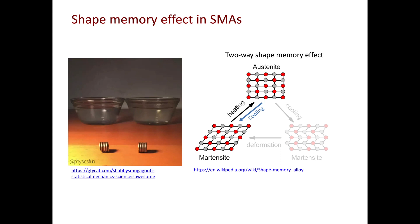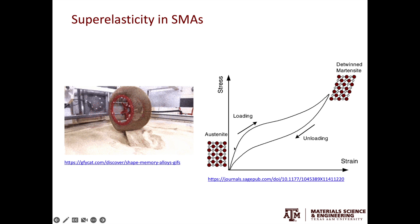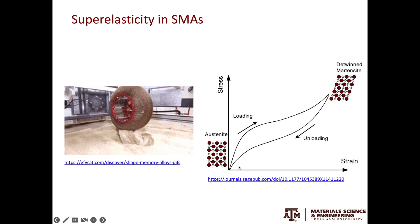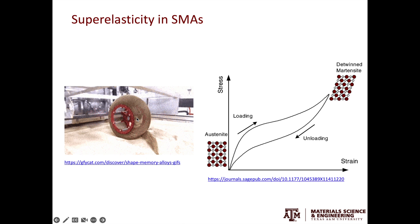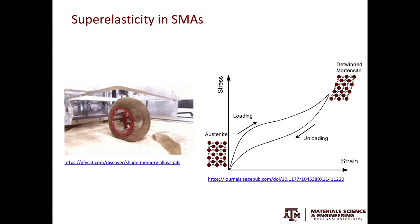The last thing to discuss about shape memory alloys is superelasticity, which is also a TRIP effect. Starting from austenite, if you apply a load, the austenite will phase transform into detwinned martensite. When the load is removed, it transforms back to austenite, so the material can experience fairly large strain without plastic deformation. The example on the left is the tire of the Mars rover — the tire is made from NiTi wires. Scientists and engineers at NASA took advantage of the superelasticity of shape memory alloys to design these super-compliant and damage-tolerant tires to help the rover explore rocky and uneven Martian surfaces.